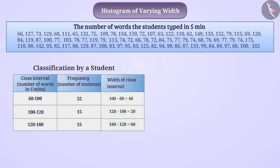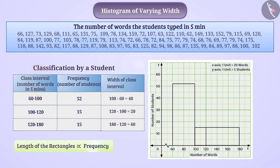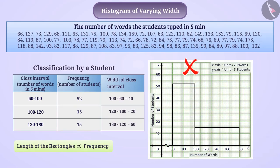In order to represent these figures, the student drew the histogram such that the length of rectangles for each class interval was proportional to frequency. Did he draw the correct histogram? Think. No, this is an incorrect histogram. Let's understand the reason for this.